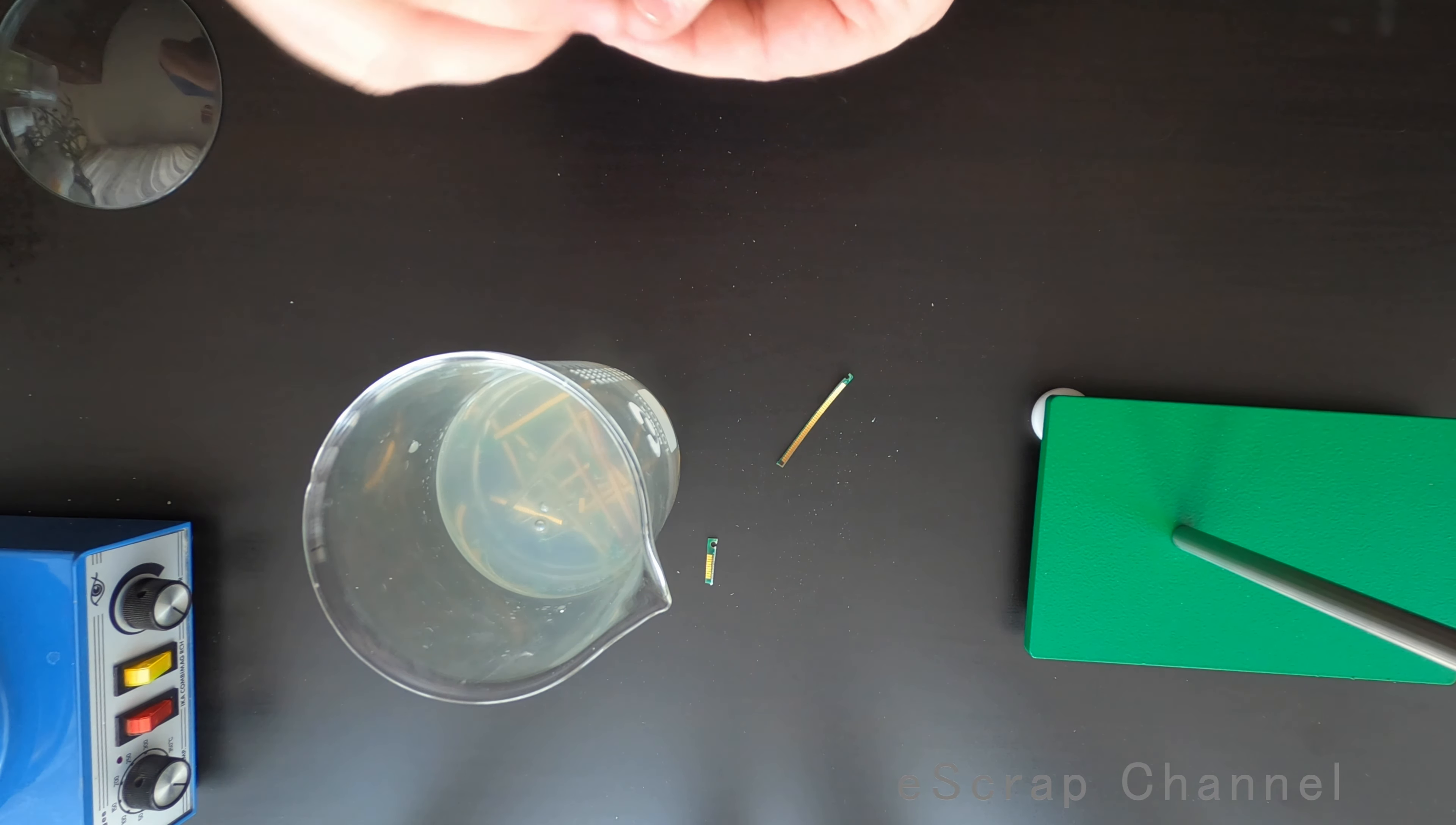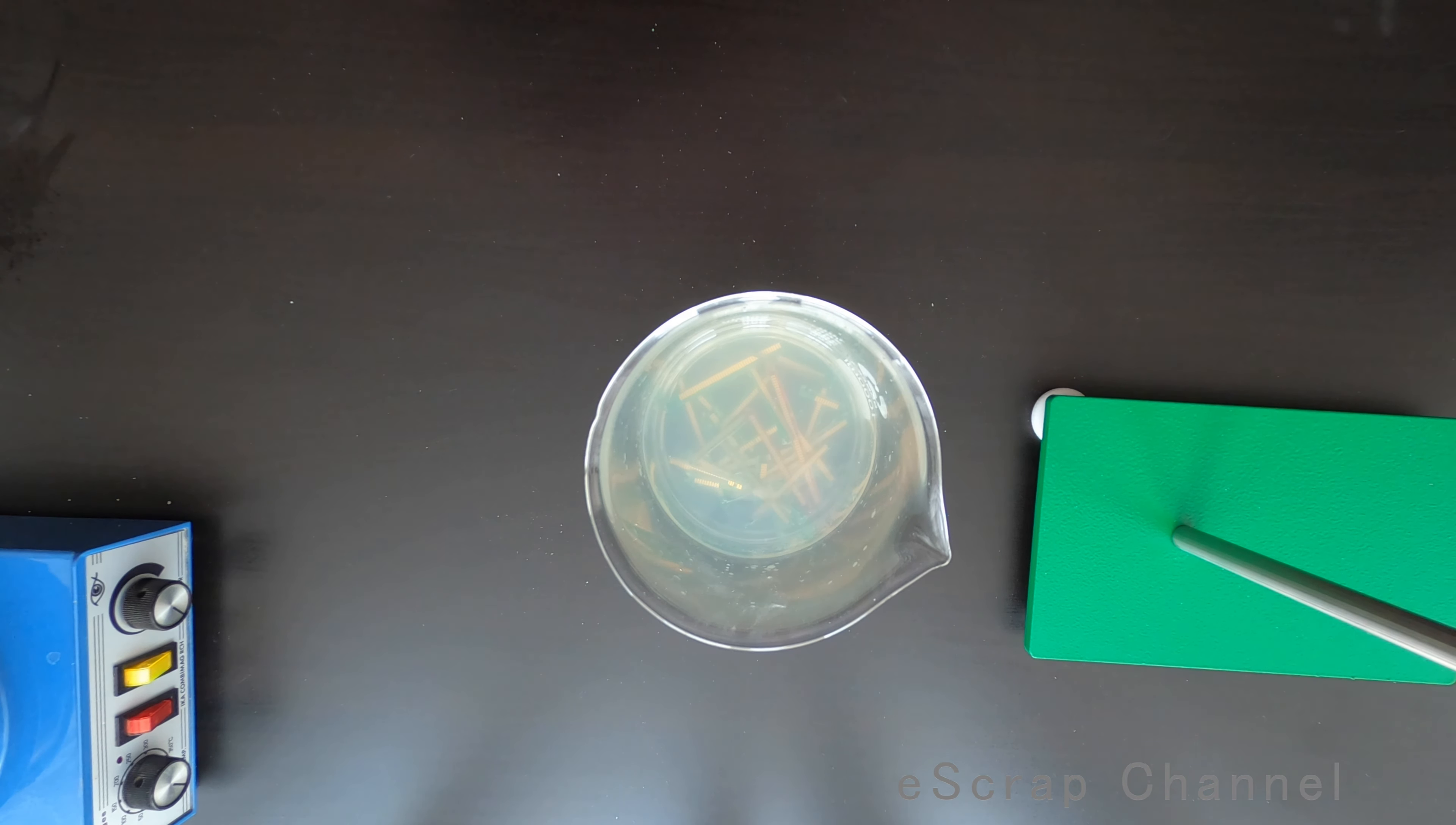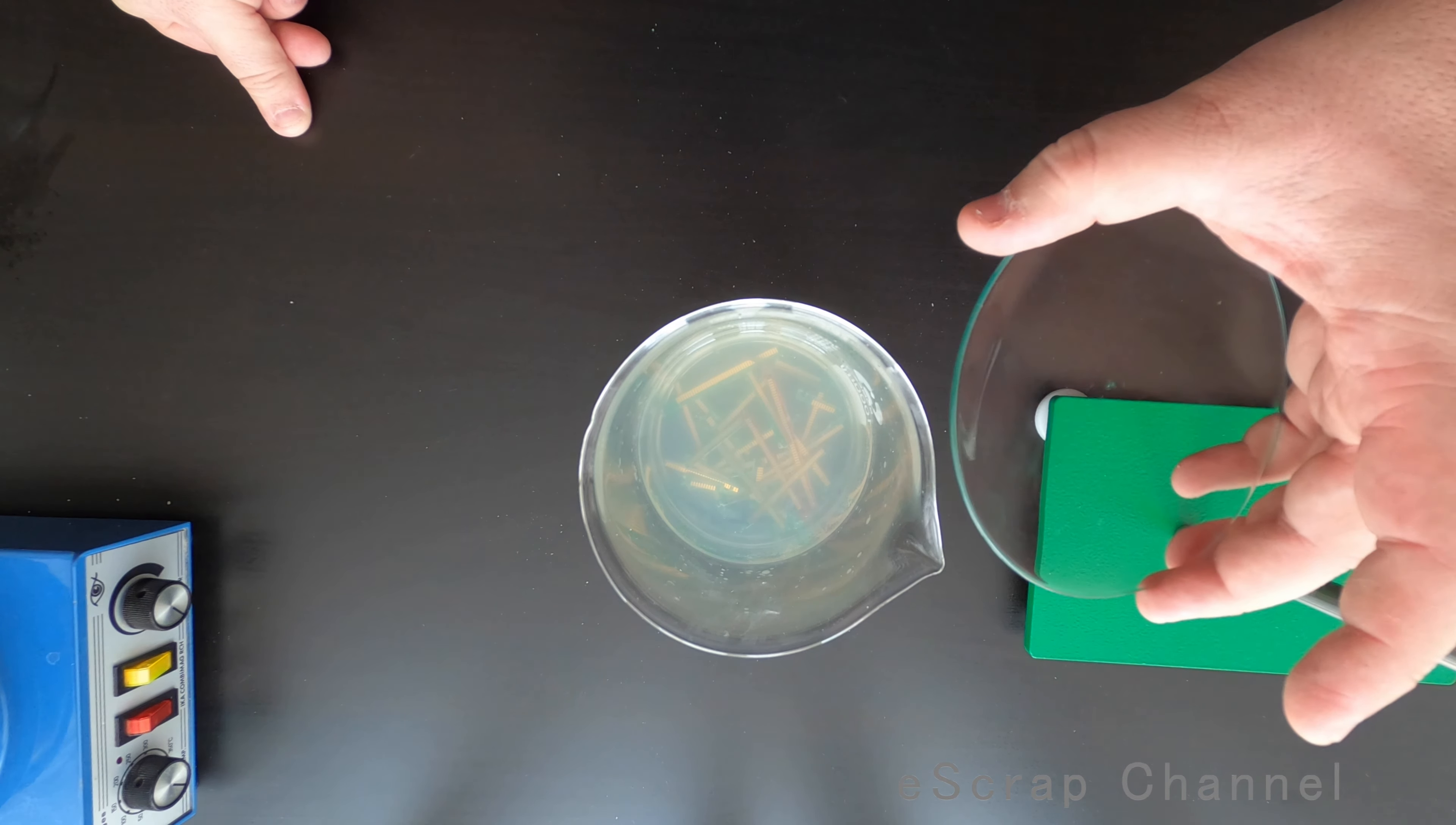We have citric acid. Citric acid is a weak acid but it's really good for one thing: to dissolve copper. We know we have copper under the gold plating, so our target is for the copper under the gold plating to be dissolved by citric acid, and the gold plating to be removed from the RAM fingers.